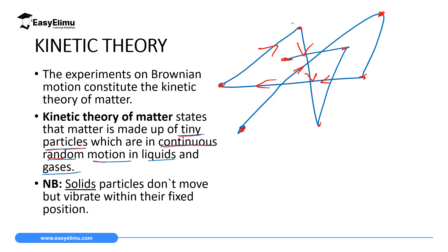In this lesson, we are going to see how to make the particles of solids also start moving by increasing the temperature of the solid particles, breaking the force between them so those solids can move. But solids don't move — they only vibrate within their fixed position. So the full statement of kinetic theory of matter is: matter is made up of small particles which are in continuous random motion in liquids and gases, and in constant vibration in solids.